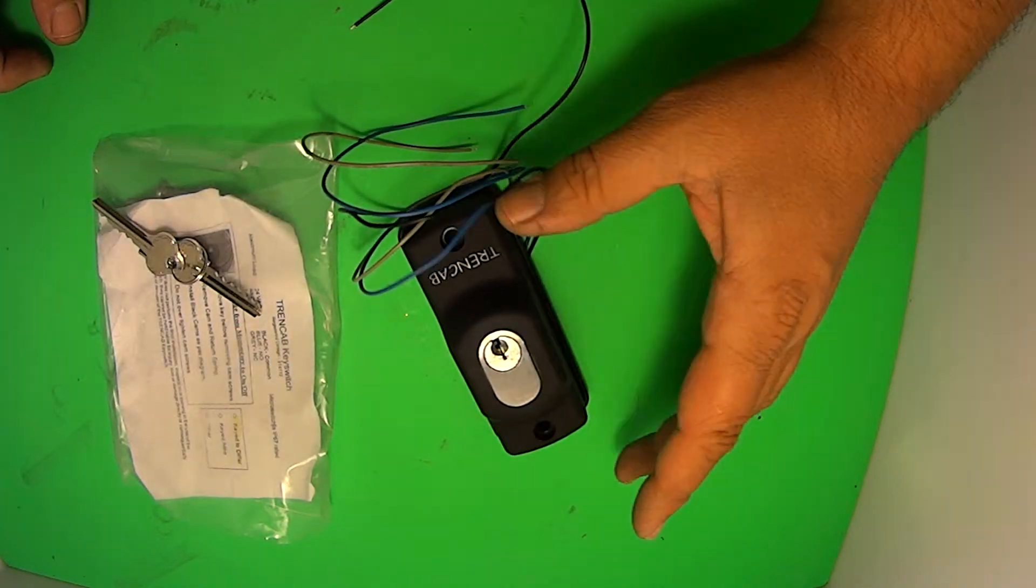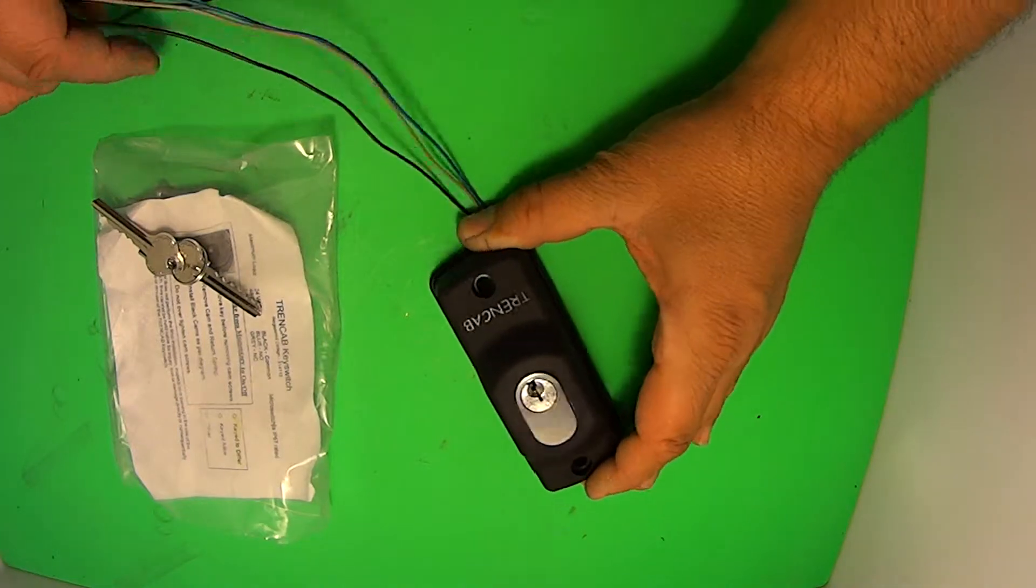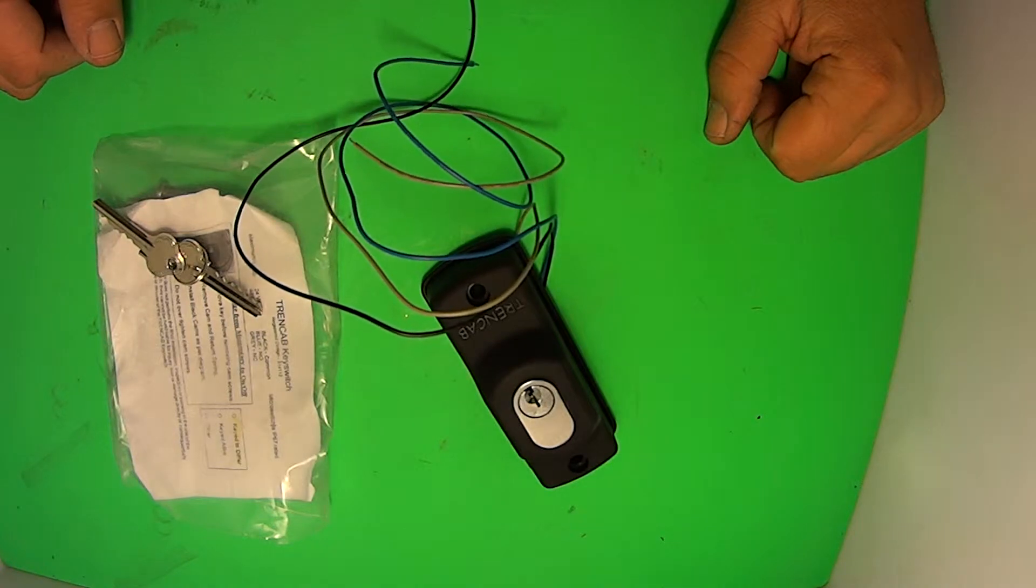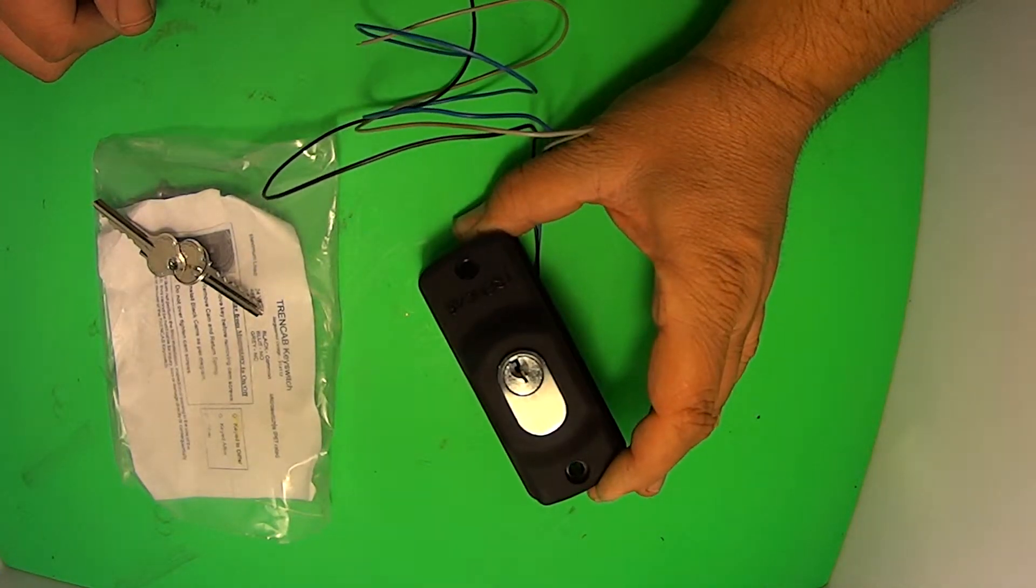by installing the right cylinder you can simply install this on the front and then hook up your wires so it can activate a gate, roller door, sliding door, anything electric, basically anything you want to switch on.